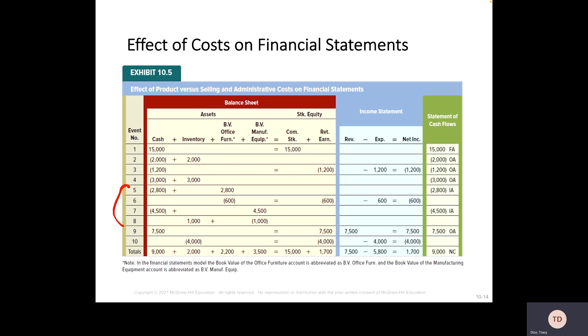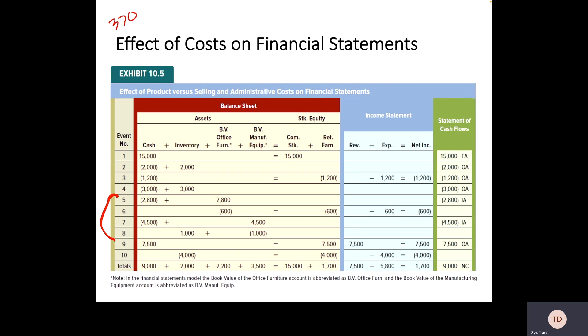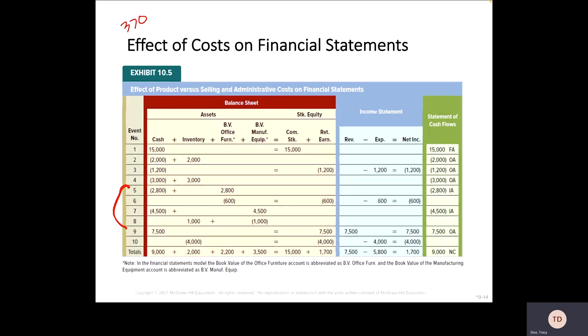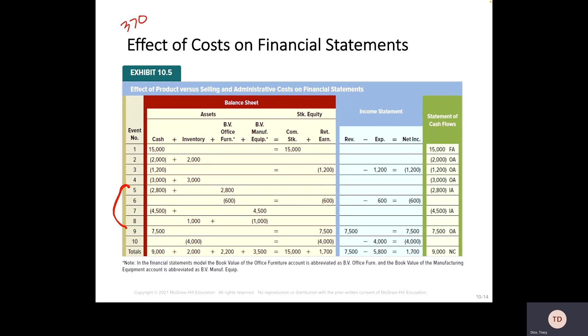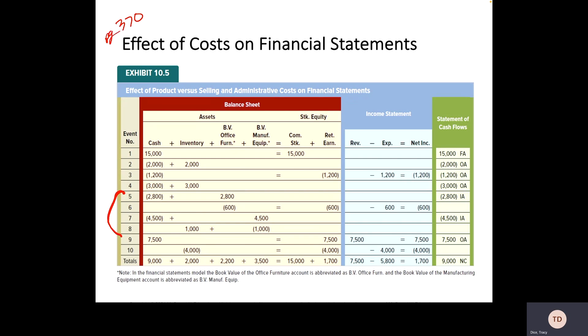We're talking about page 370. They tell you that the useful life or the estimated salvage value is $400. So we get 2,800 was what we paid for it. Our estimated salvage value is 400. And the useful life is four years. When we do that math, you should end up with your depreciation cost of $600.